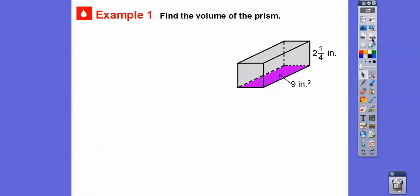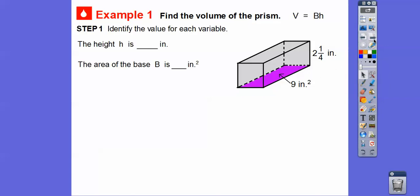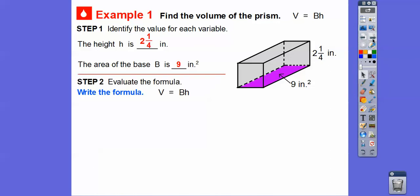Here's an example — let's find the volume of this prism. I know this is the area because it's in inches squared. Remember, anything in squared units is area. So this is the area of the base. We can use the formula volume equals base times height, where the base is 9 inches squared and the height is 2 and 1/4 inches.